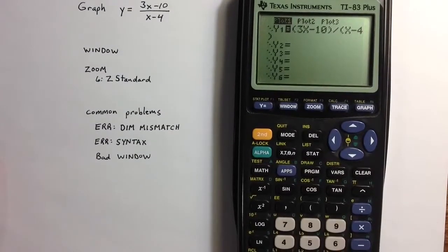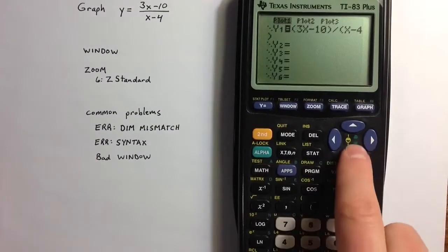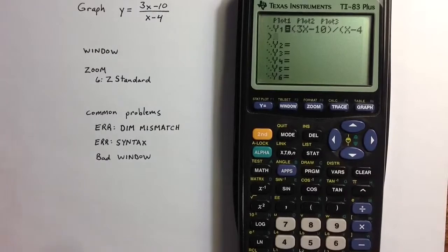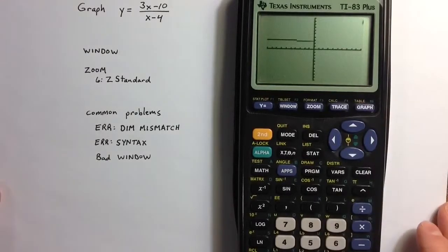To make the plot unhighlighted, to turn off the stat plot. And now the graph works fine.